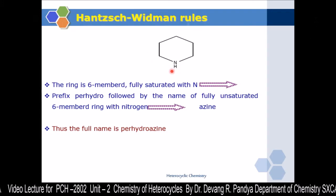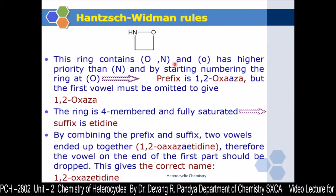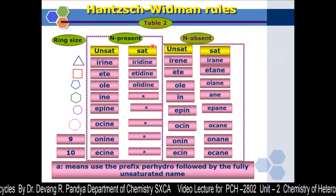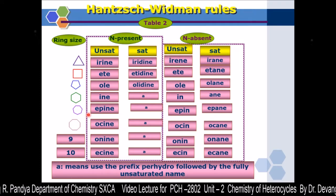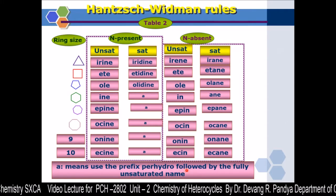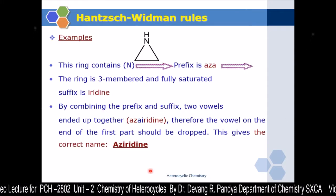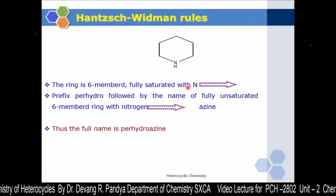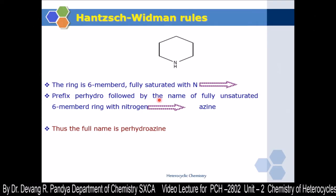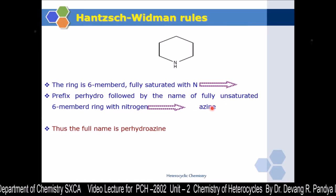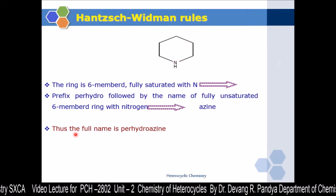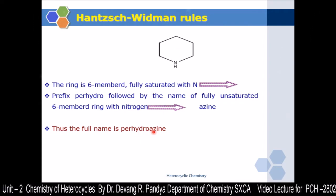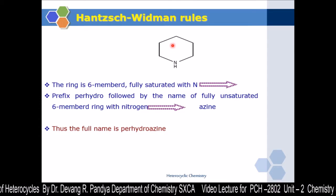For a fully saturated six-membered nitrogen-containing ring, according to the suffix table, we use the prefix perhydro followed by the fully unsaturated name. The six-membered nitrogen-containing unsaturated ring is azine, so the fully saturated compound is named perhydroazine. This is the Hantzsch-Widman nomenclature for this six-membered fully saturated ring.